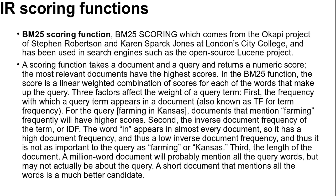Three factors affect the weight of a query term. First, the frequency with which a query term appears in a document, also known as TF for term frequency. For the query 'farming in Kansas', documents that mention farming frequently will have higher scores. Second, the inverse document frequency of the term, or IDF. The word 'in' appears in almost every document, so it has a high document frequency and thus a low IDF, making it less important than 'farming' or 'Kansas'. Third, the length of the document — a million-word document will probably mention all the query words but may not actually be about the query, while a short document that mentions all the words is a much better candidate.